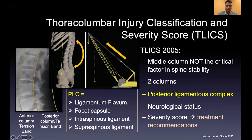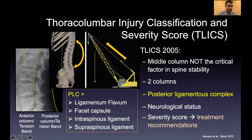There are three things you look at: two can be obtained from imaging and one from the neurologic exam. You look at the integrity of the posterior ligamentous complex, or PLC, which is comprised of the ligamentum flavum, facet capsule, interspinous ligament, and supraspinous ligament.